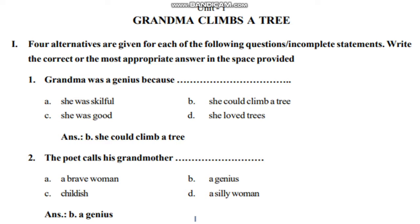Friends, the first question is about 'Grandma Climbs a Tree.' This section has multiple choice questions. Four alternatives are given for each of the following questions or incomplete statements. Write the correct or most appropriate answer in the space provided. If you have questions or options, you can write the answer.